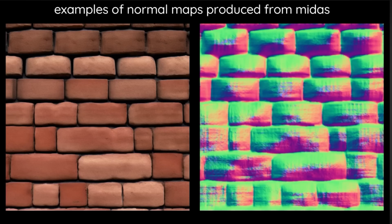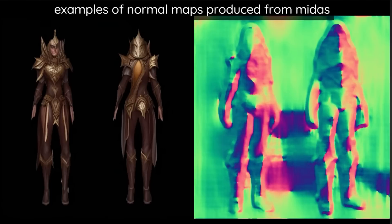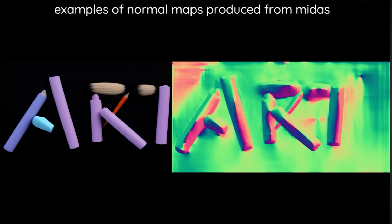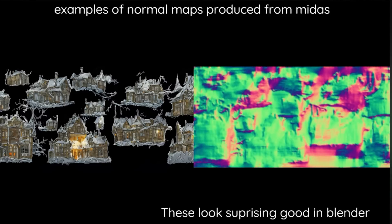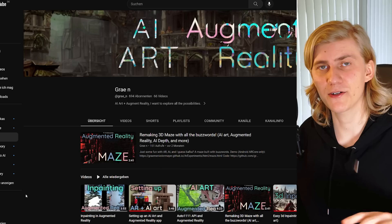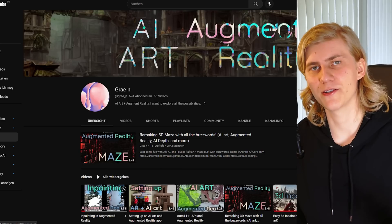He has written an add-on for Automatic1111 Stable Diffusion called High Resolution Normal Maps for Stable Diffusion Web UI. Be sure to also check out his YouTube channel, which I'll link below.